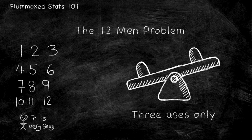You then tell men one through eight to get on the seesaw. If the seesaw moves in one direction, you can then tell the four people on the side that moved to repeat the action in twos, and then in ones, and you have an answer. However, if the seesaw doesn't move, we then move to men one, two, and three against nine, ten, and eleven.